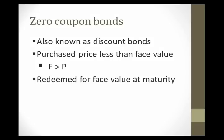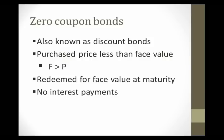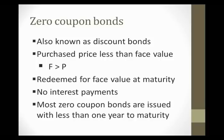They're redeemed for face value at maturity. There are no other interest payments in between. So what happens is there's an implied interest rate that comes from the difference, from the discount between what you pay for the bond and what you receive at maturity. And of course, that discount has to be adjusted based on how long you wait to receive it.